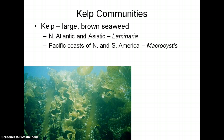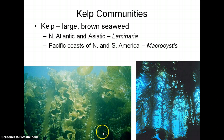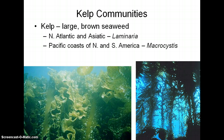This is Laminaria and this is Macrocystis. You can see the two different types of kelp. The Laminaria on the left is very dense, whereas the Macrocystis on the right is much less dense. So you have more things living in the water column with Macrocystis than you would with the denser Laminaria.